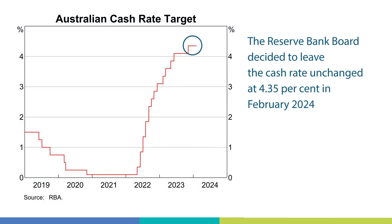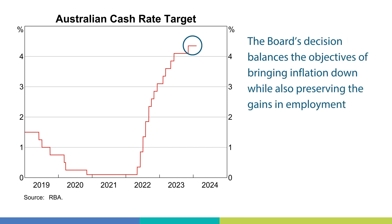Let's finish up by looking at monetary policy and the most recent decision. The Reserve Bank Board decided to leave the cash rate unchanged at 4.35% in February. The Board's decision balances the objectives of monetary policy by supporting the return of inflation to target in a reasonable timeframe, with gradual easing in labour market conditions to levels consistent with full employment. The Board expects that it will be some time yet before inflation is sustainably in the target range, and the path of interest rates will depend on the data and the evolving assessment of risks.